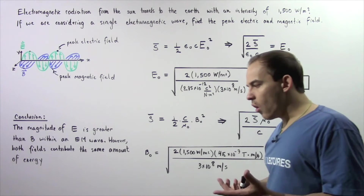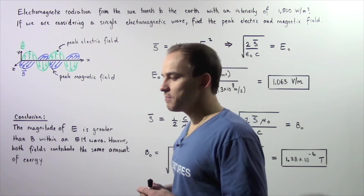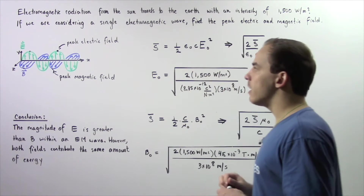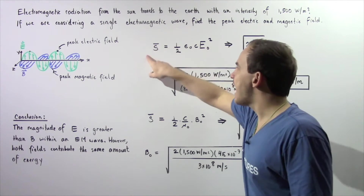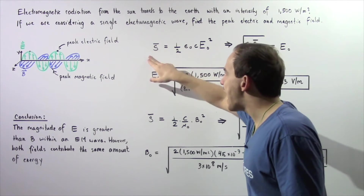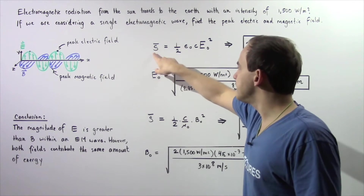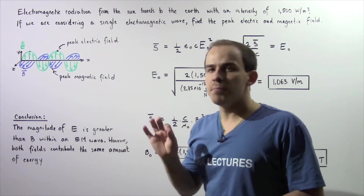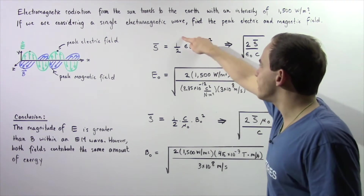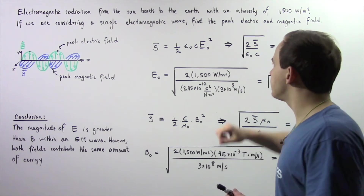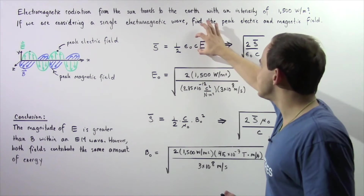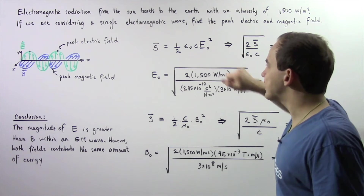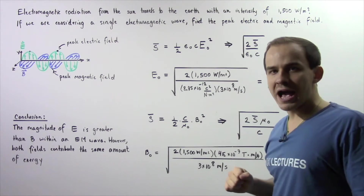Let's begin by recalling the relationship between peak electric field and the intensity of the propagating wave. The intensity of our wave — the average power per unit area given by S with a bar symbol on top, also known as the Poynting vector — is equal to one half multiplied by epsilon naught multiplied by c, the speed of light, multiplied by our peak electric field E naught squared.